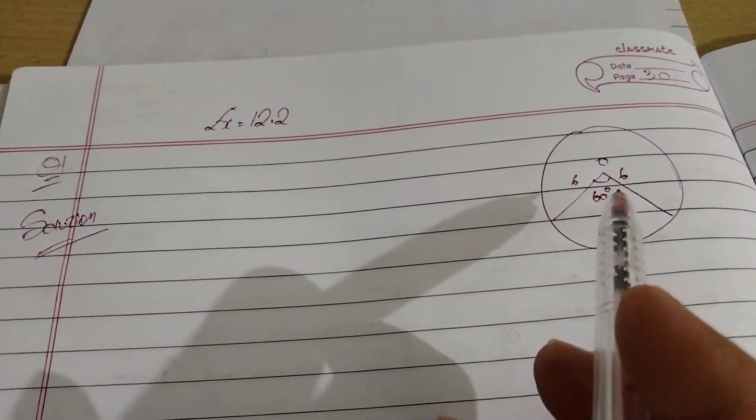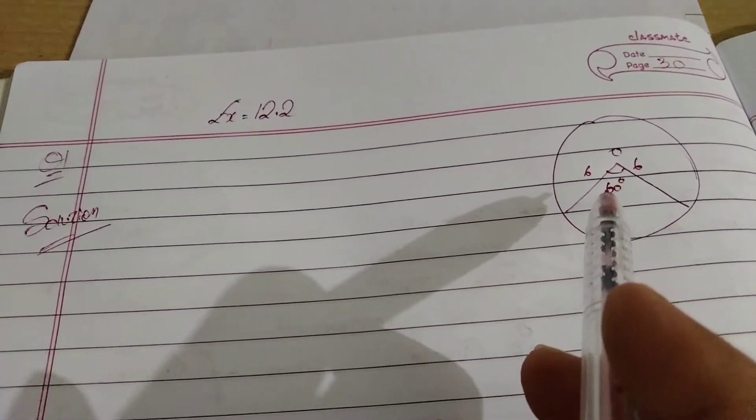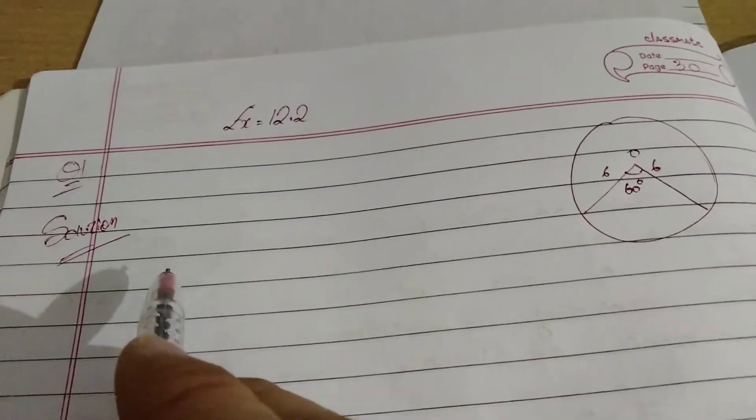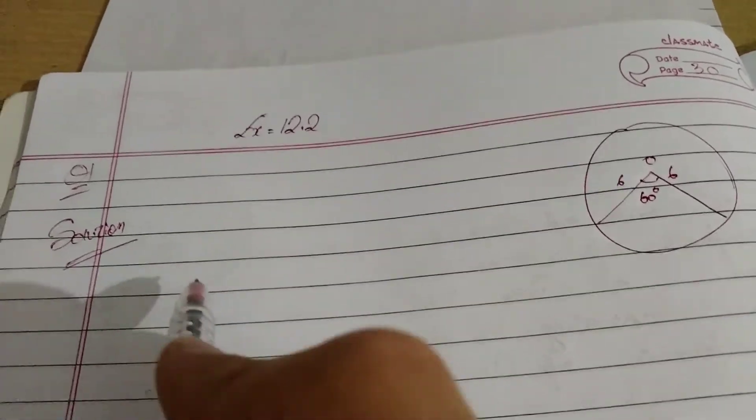So I've written down the circle to give you some idea. Now we are going to start writing the equation. We are going to start with area of sector.